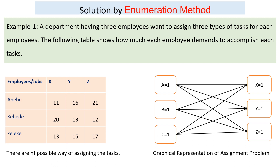As you can see from this table, Abeba requires 11 hours to accomplish job X, 16 hours for job Y, and 21 hours for job Z. Cabada requires 20, 13, and 12 to accomplish X, Y, and Z respectively. Laga requires 13, 15, and 17 to accomplish X, Y, and Z jobs respectively.